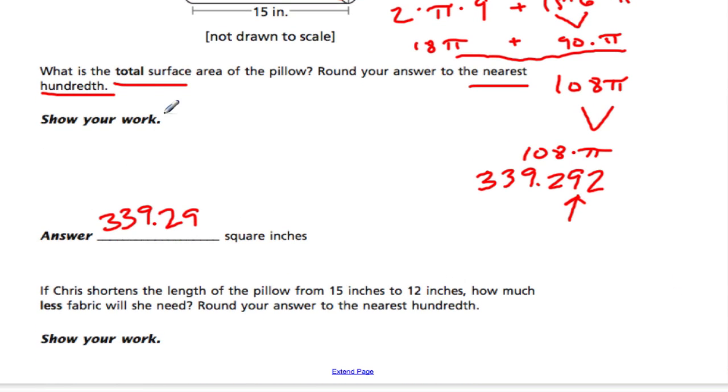So they changed the problem here by saying, what if we shorten the length of the pillow from 15 to 12 inches, how much less fabric is needed? And they say round the answer to the nearest hundredth. So we have this answer we're going to use again. We're going to add a smaller pillow, and we can subtract the two.